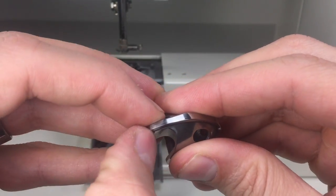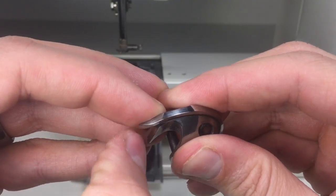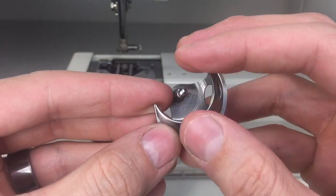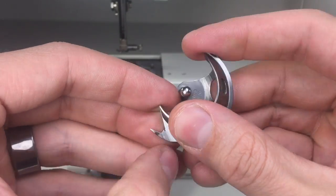I'm running my fingernail down the tip of the hook, checking for any slight imperfections. It would almost feel like a small barb, and we're going to address this by buffing it off.